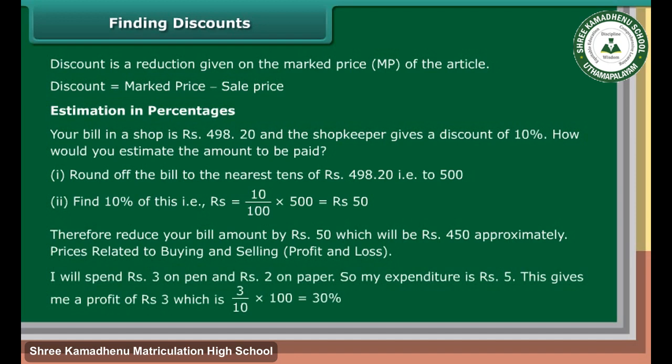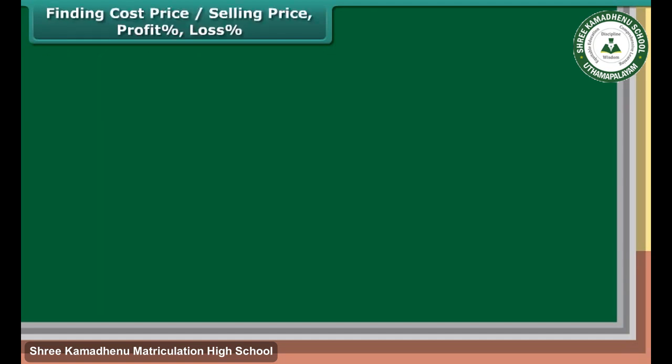Price related to buying and selling — Profit and Loss: I will spend Rs. 3 on pen and Rs. 2 on paper, so my expenditure is Rs. 5. This gives me a profit of Rs. 3, which is 3 upon 10 into 100, equal to 30%. We will also be finding cost price, selling price, profit percentage, and loss percentage.